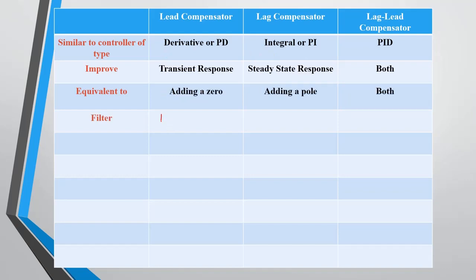In the lag-lead case it is equivalent to adding both a zero and a pole. Lead compensator is equivalent to a high-pass filter, and lag compensator is equivalent to a low-pass filter. A high-pass filter allows frequencies above the cutoff frequency and a low-pass filter allows below the cutoff frequency.